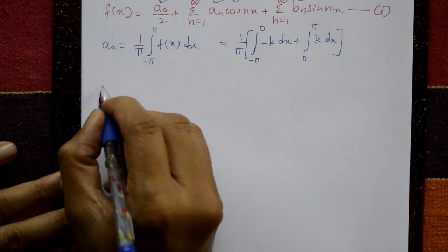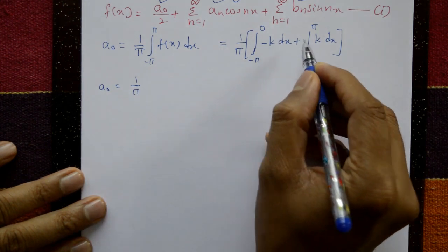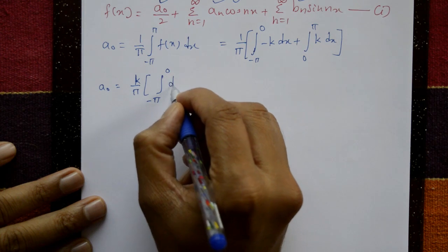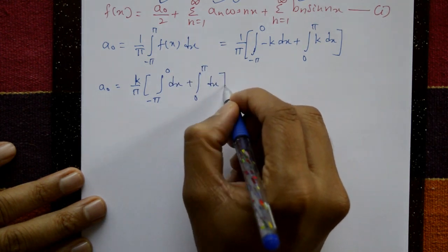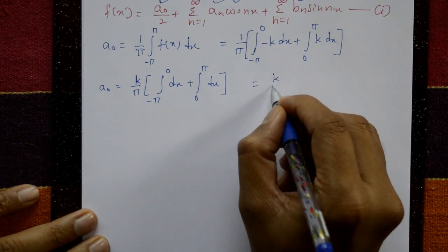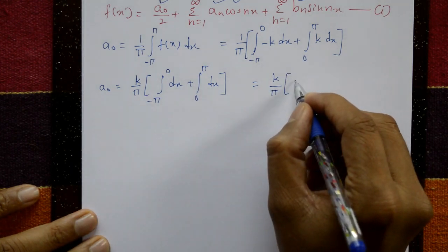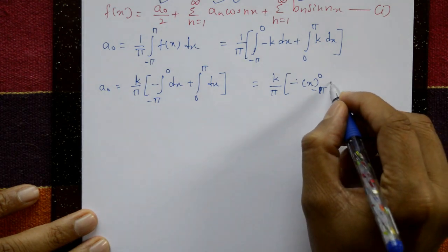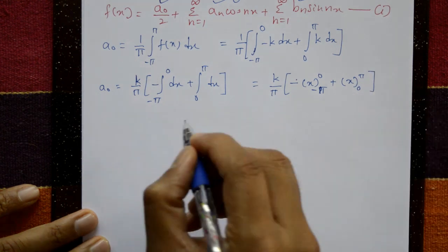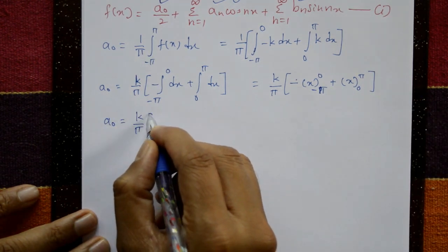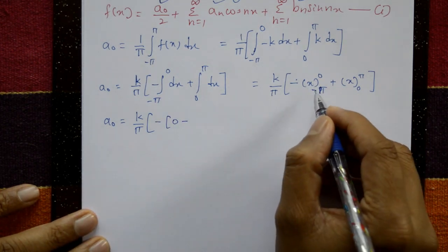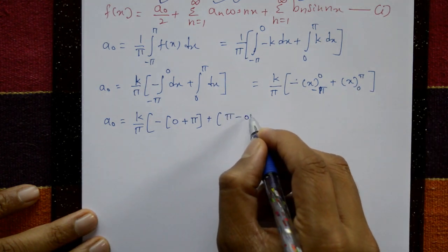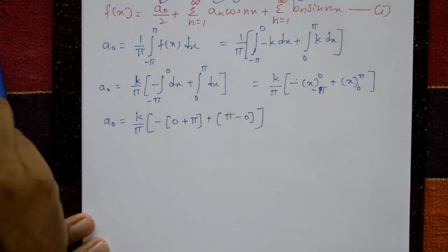So a₀ equals 1/π, taking k outside: k/π times [integral from minus π to 0 of (minus 1) dx plus integral from 0 to π of 1 dx]. Evaluating: put upper limit 0 minus lower limit minus π, and the second term gives π minus 0. The terms minus π and plus π cancel, therefore a₀ equals 0.